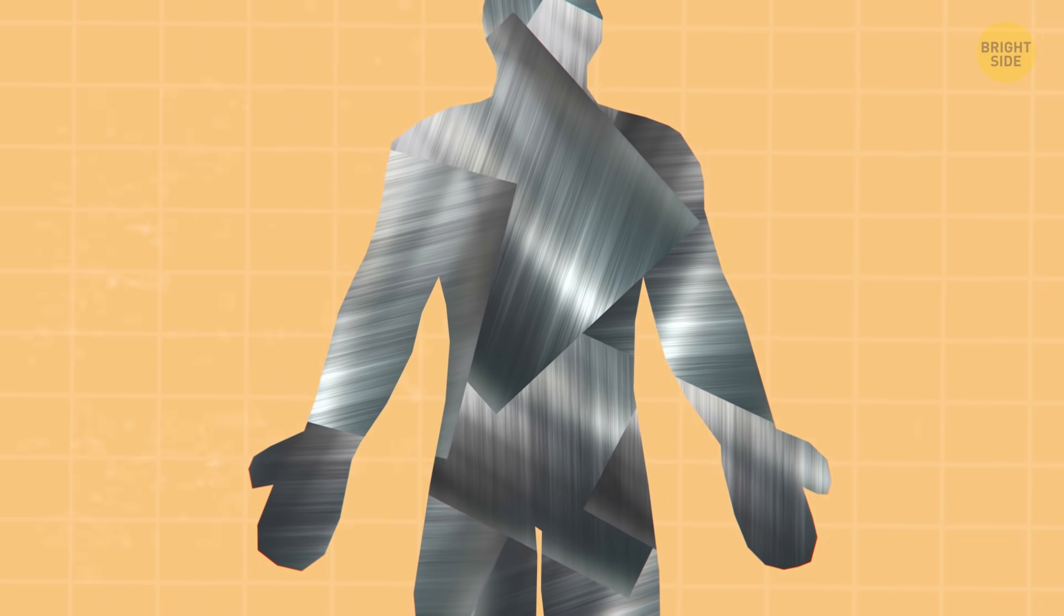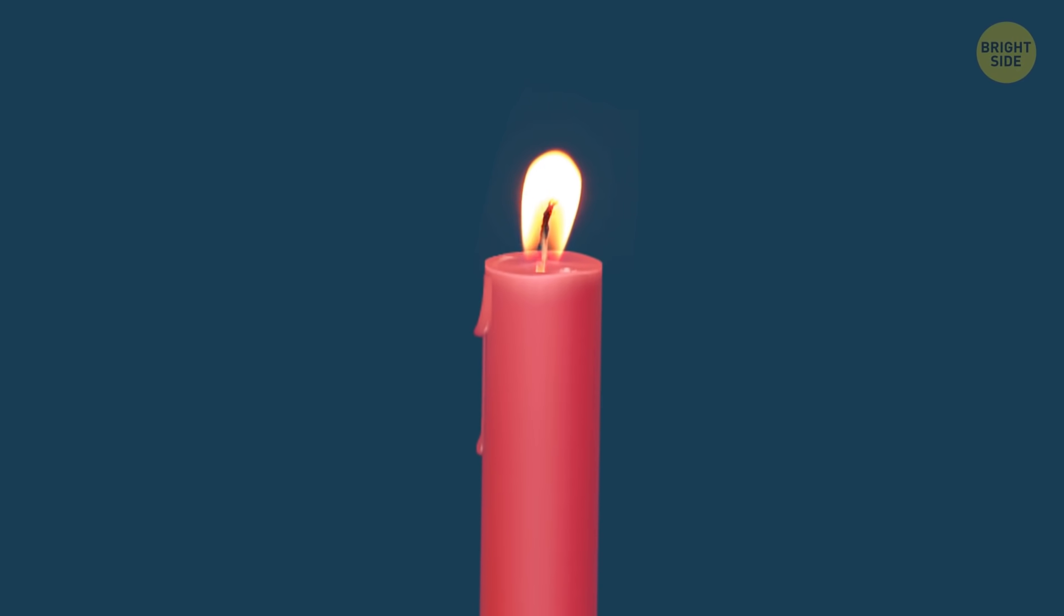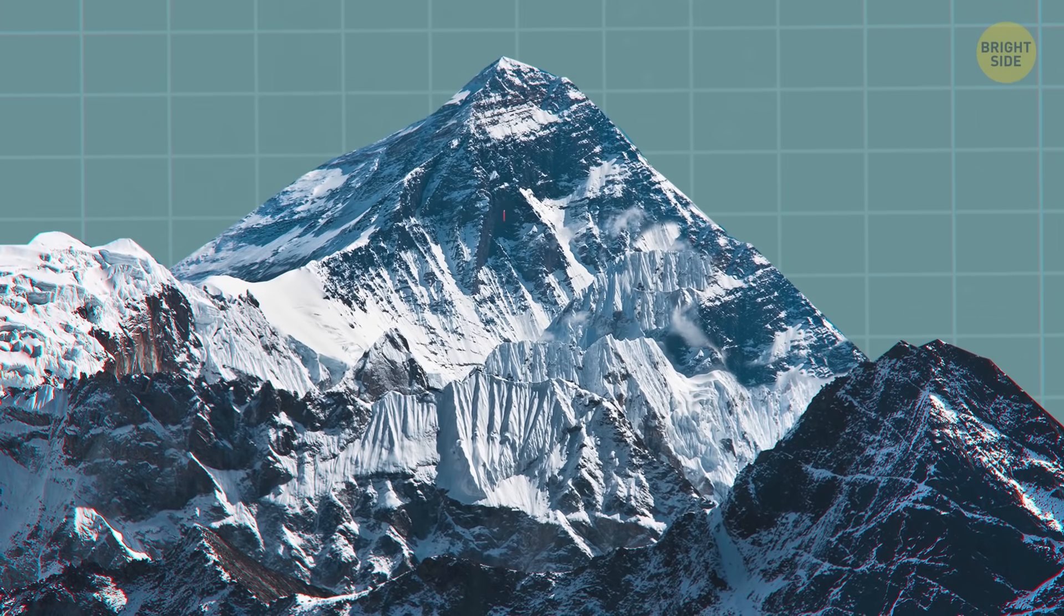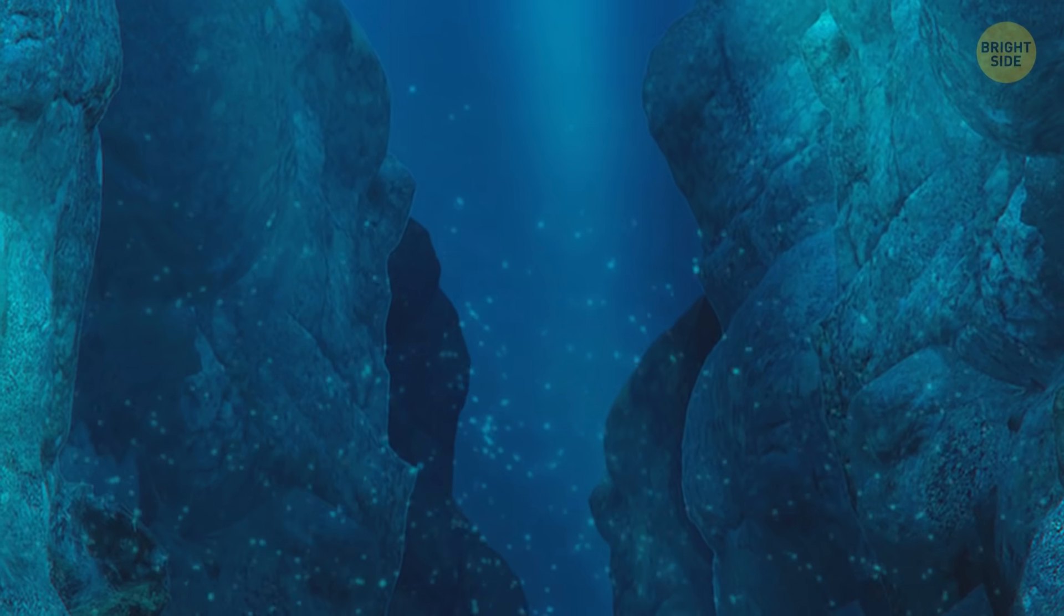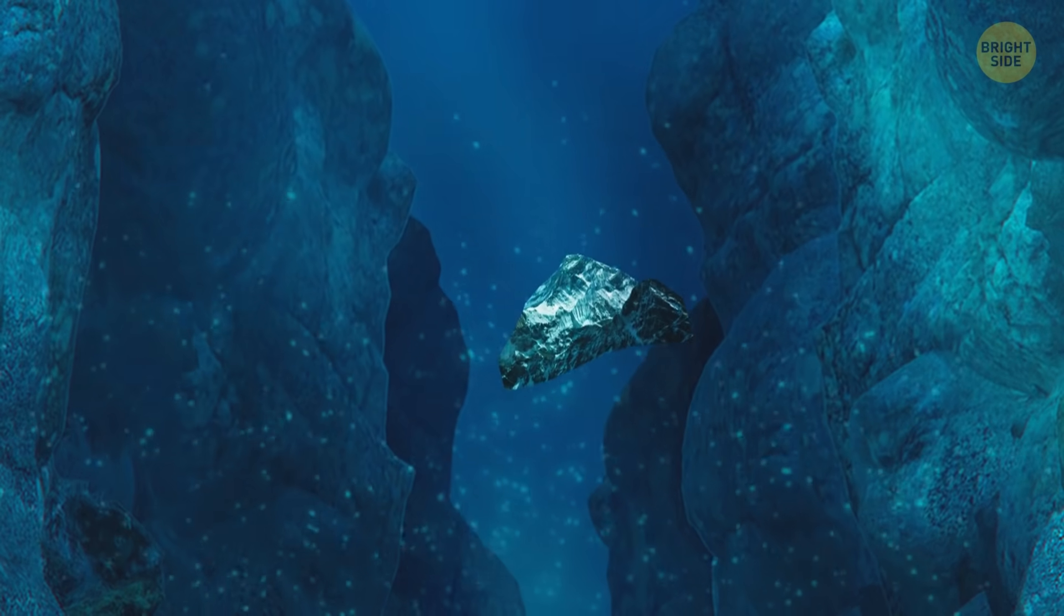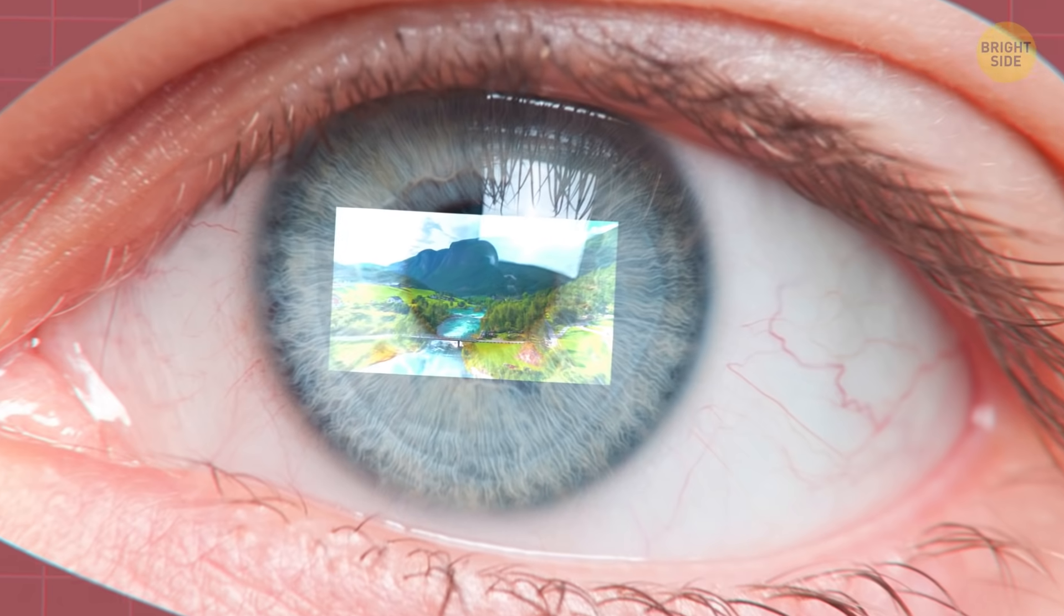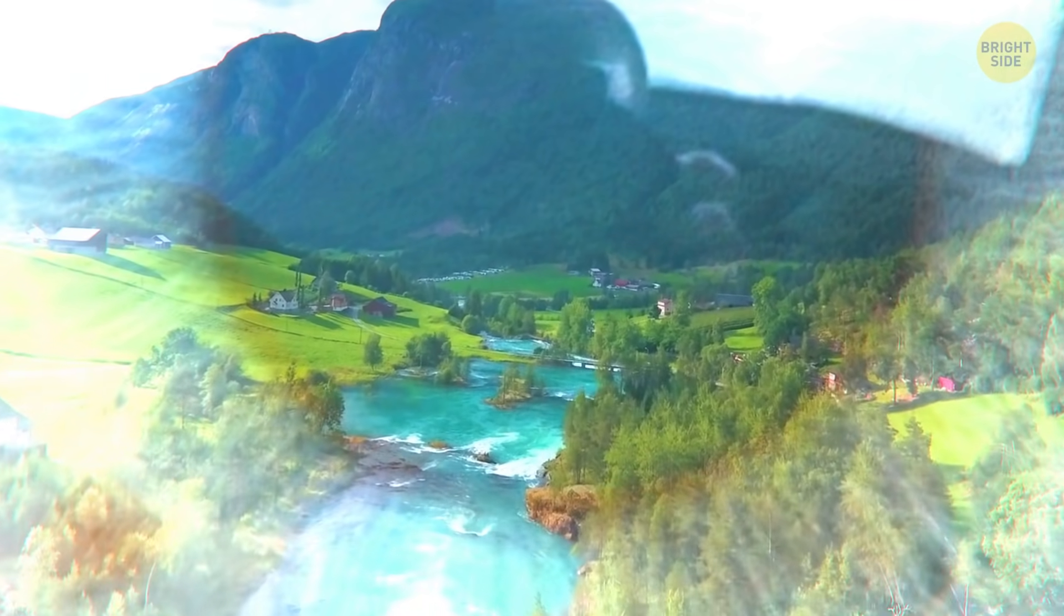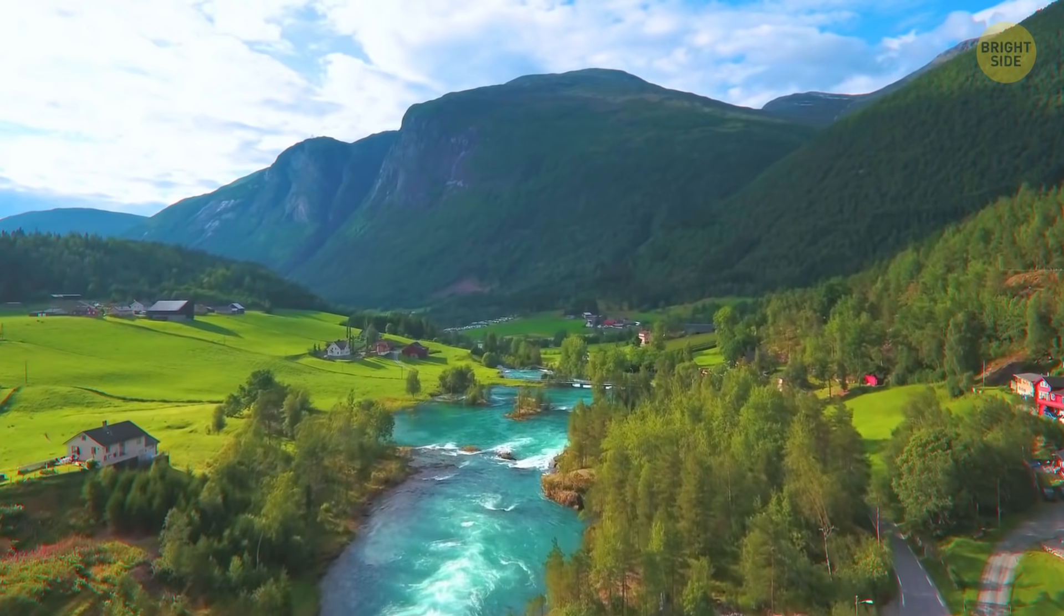The human body contains enough iron to make a 3-inch nail. The human eye can see a candlelight up to 30 miles away. For comparison, the Mariana Trench, the deepest known place on this planet that could fit Mount Everest with room to spare, goes only 6 miles down. When you look at the world, the picture projected on the back wall of the eye is upside down. Luckily, the video card in your brain corrects that.